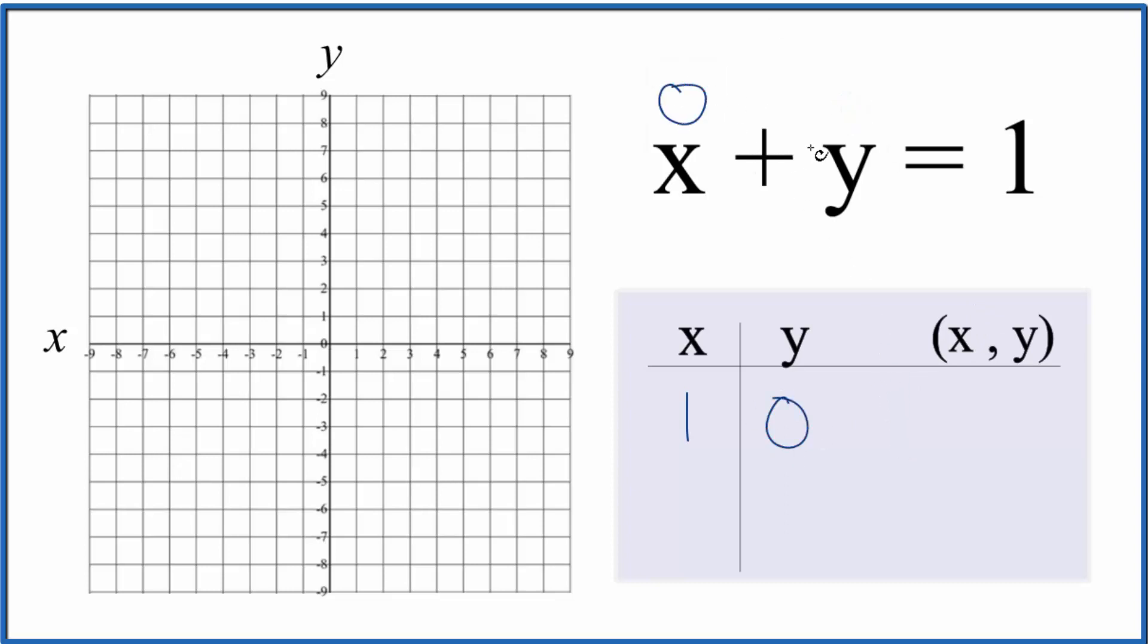If x was 0, y would have to be 1. 0 plus 1 would give us 1. So x is 0, y is 1.